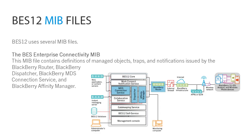The BES Enterprise Connectivity MIB file contains definitions of managed objects, traps, and notifications issued by the BlackBerry Router, BlackBerry Dispatcher, BlackBerry MDS Connection Service, and BlackBerry Affinity Manager.